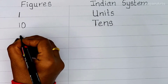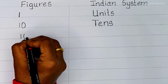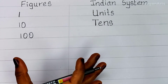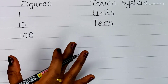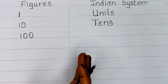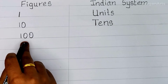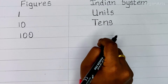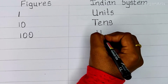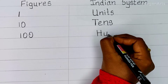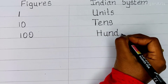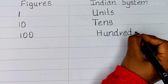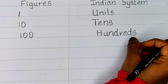So next, 1 0 0 — that is 100. So already in our channel we have covered 1 to 100 words, and our video is in the description, you can check it out. In the Indian system we call it as Hundreds.